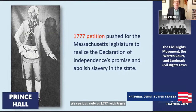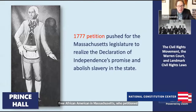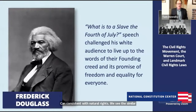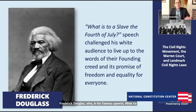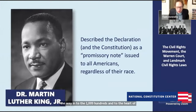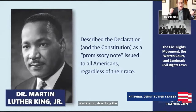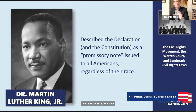We see it as early as 1777 with Prince Hall, a free African American in Massachusetts, who petitioned the Massachusetts legislature to end slavery in the state, saying it was inconsistent with the Declaration of Independence and natural rights. We'd see this with Frederick Douglass in his famous speech 'What to the Slave is the Fourth of July,' challenging his white audience to live up to the promise of the Declaration. And we see it extend into the civil rights movement with Dr. Martin Luther King Jr. at the March on Washington, describing the Declaration and Constitution as a promissory note issued to all Americans regardless of their race.